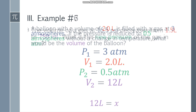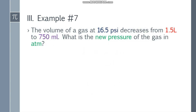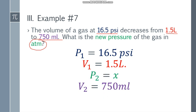Example number 7. The volume of a gas at 16.5 psi decreases from 1.5 liters to 750 ml. What is the new pressure of the gas in atmosphere? Take note: the initial pressure is in psi but we need the answer in atm. Also, volumes are 1.5 liters and 750 ml — different units. We can find the answer in psi first, then convert to atm. We also convert 1.5 liters to 1500 ml so both volumes share the same unit.